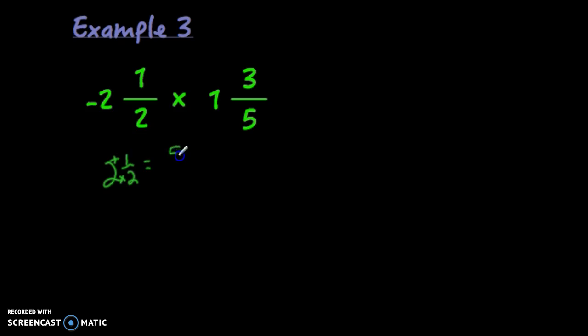So 2 times 2 is 4 plus 1 is 5. This is going to be 5 halves. And again, if I change this one, 1 and 3 fifths, I would do 5 times 1 is 5. Add the 3, we get 8. So this is 8 fifths.